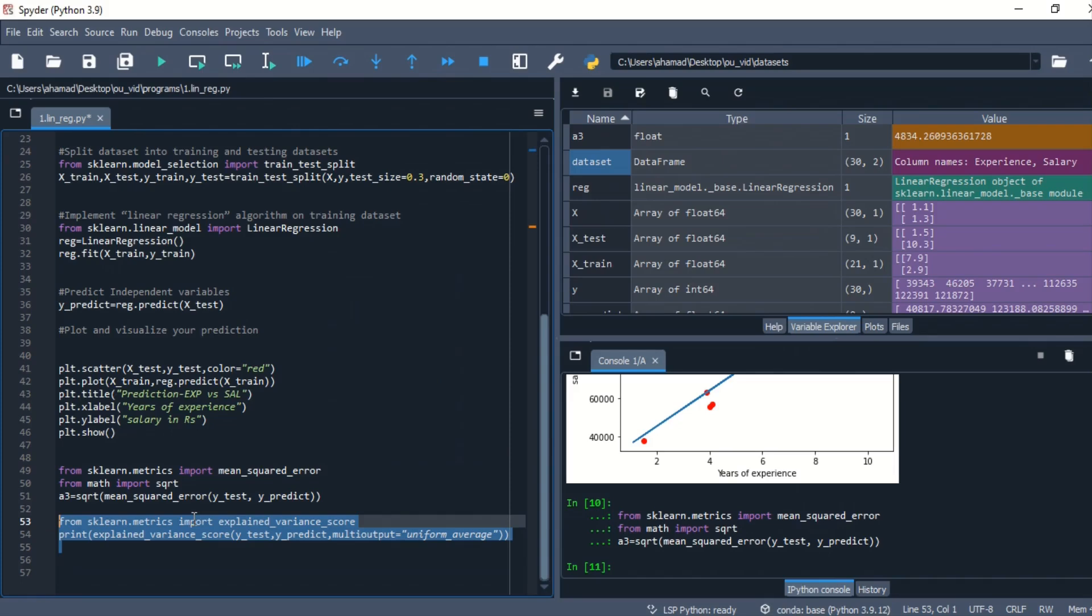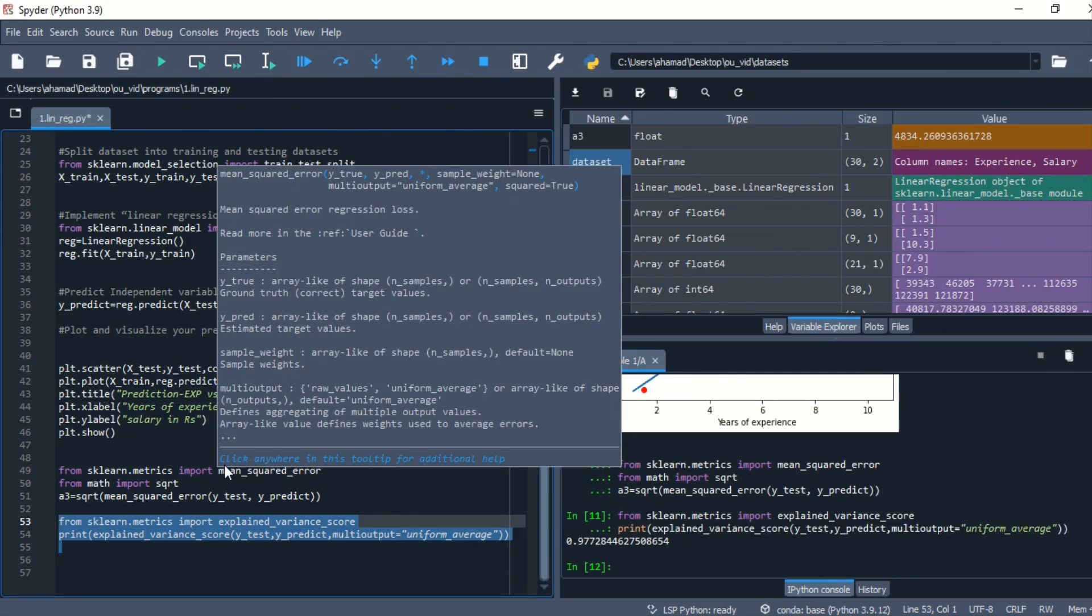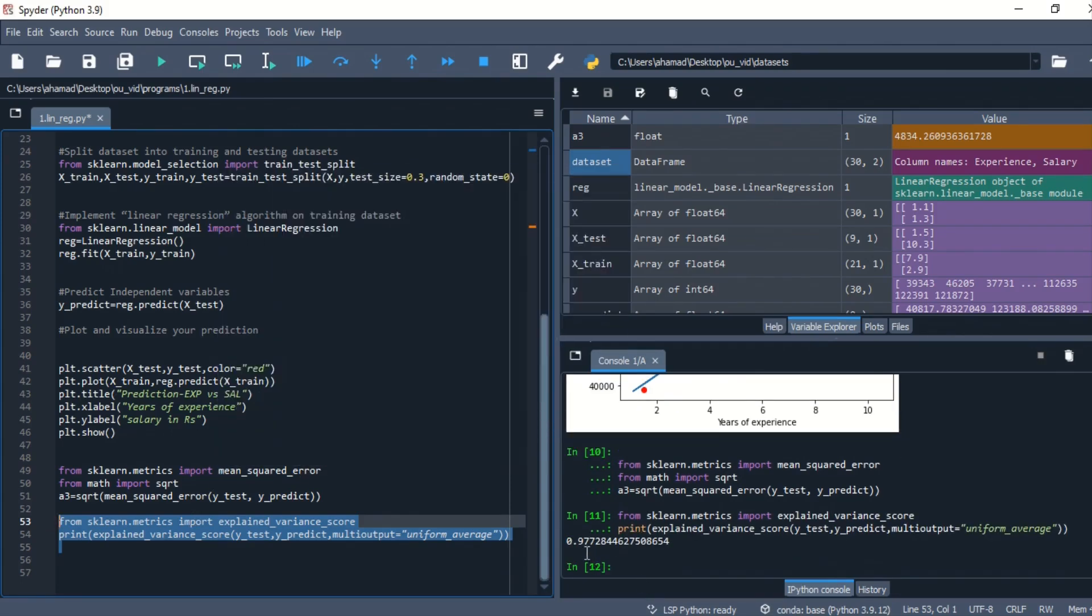Now when it comes to explained variance scores, that means it's executed successfully and it is given 97% accuracy, which is quite good.